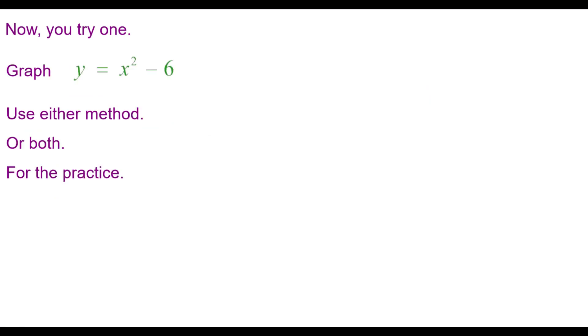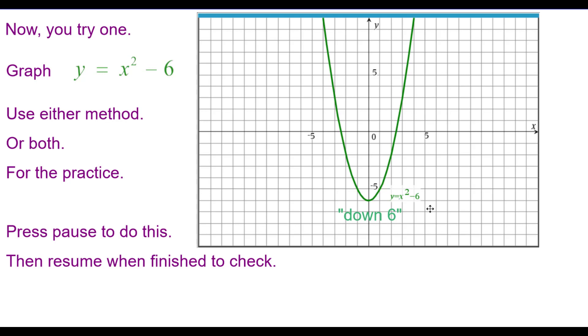Now you try one. Graph y equals x squared minus 6. Use either method or both for the practice. Press pause to do this and then resume when you're finished to check your answer. And this is the answer. Y equals x squared minus 6 is the parabola shifted down 6 units.